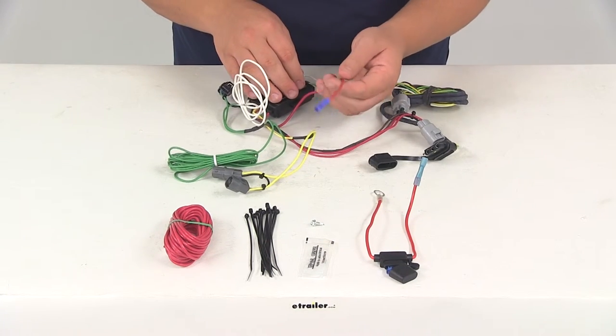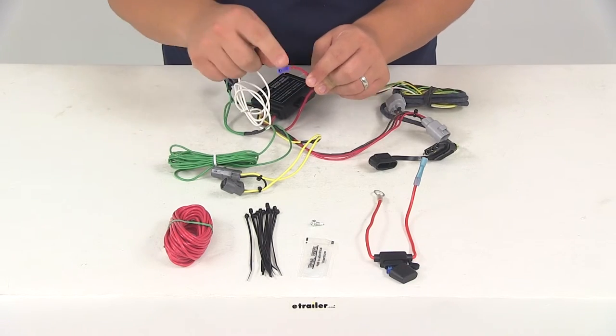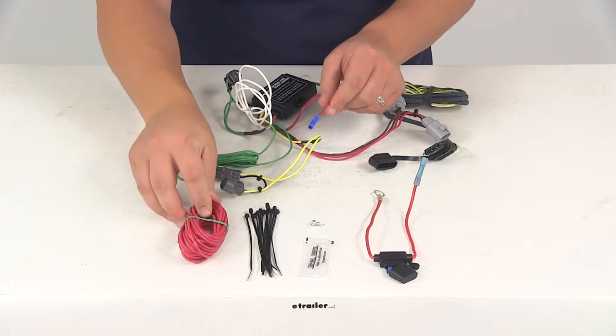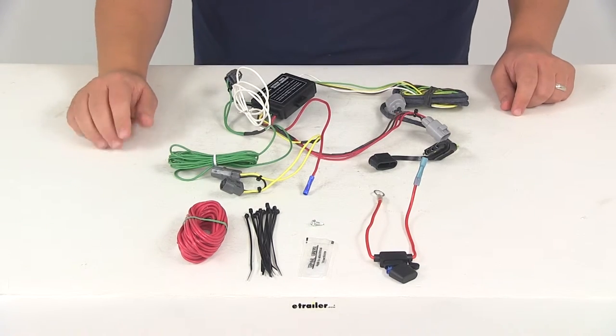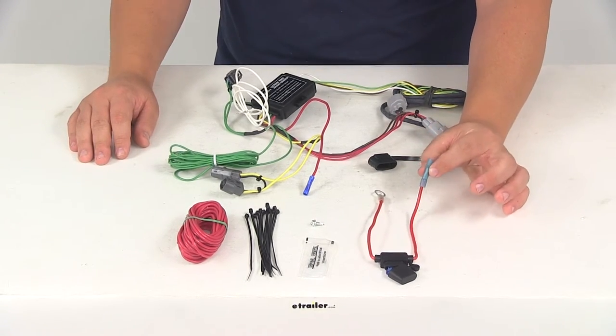Next, you'll need to run your hot lead to the vehicle battery. Hot lead is going to be this red wire right here with the blue buck connector. That's going to get connected to the bundle of red wire. The other end of the red wire is going to run all the way up to the engine compartment, and it's going to get connected to this half of the fuse holder.